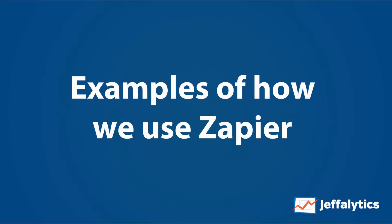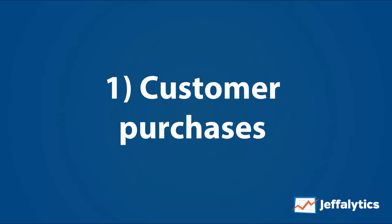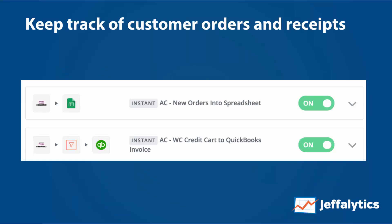Here are some examples of how we use Zapier at Jeffalytics. One: tracking customer purchases. When somebody buys one of our courses, we automatically keep the customer record in a spreadsheet so we can use that to verify purchases and keep our lists in order. The same thing happens with QuickBooks — when somebody buys, we push the receipts into QuickBooks and it makes bookkeeping a breeze.